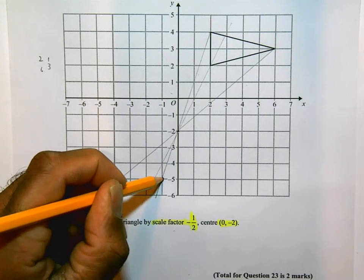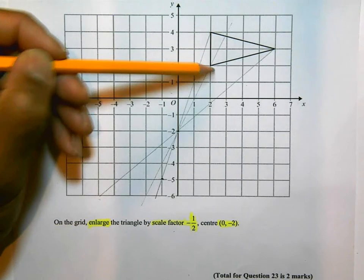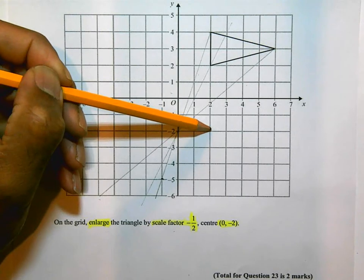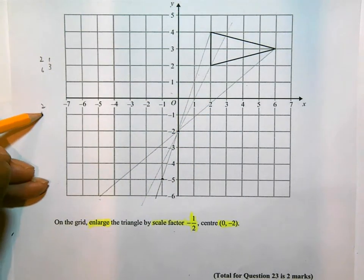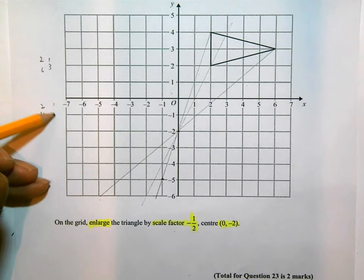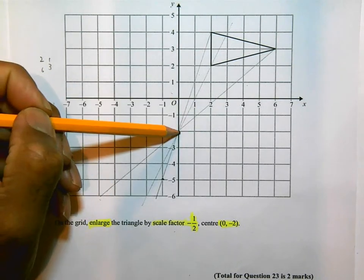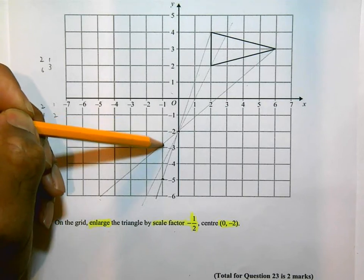This corner here is going to be 2 across and 4 up. So 2 across, 4 up. I'm going to half that, which is 1, 2. And so from the center of enlargement, I'm going to go 1 across and 2 down, which takes me to there.